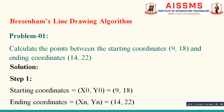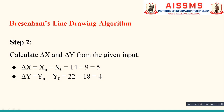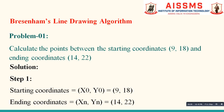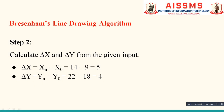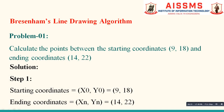Our next step is to calculate the values of delta x and delta y. The standard formula for delta x is xn minus x0. The values of xn and x0 are given in our problem statement: xn is 14 and x0 is 9, so delta x equals 5. The standard formula for delta y is yn minus y0. The value of yn is 22 and y0 is 18, so delta y equals 4.